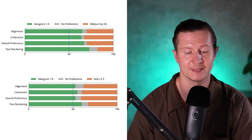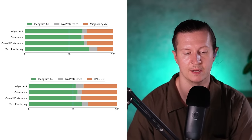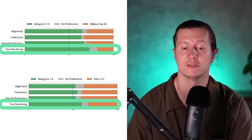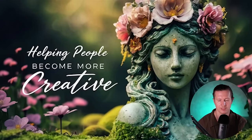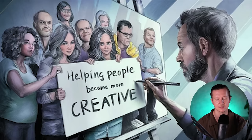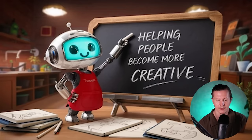Looking at this data we can see that where Ideogram is really stepping out in front is on text rendering capabilities, which opens up an avenue for incredible graphic design work. You can really start to create posters, apps, and website designs inside of an AI generator. Just look at some of these designs coming out of Ideogram — the text is coherent, the spelling is correct, each character is rendered accurately and coherently, and it opens up a whole world of possibilities for design.